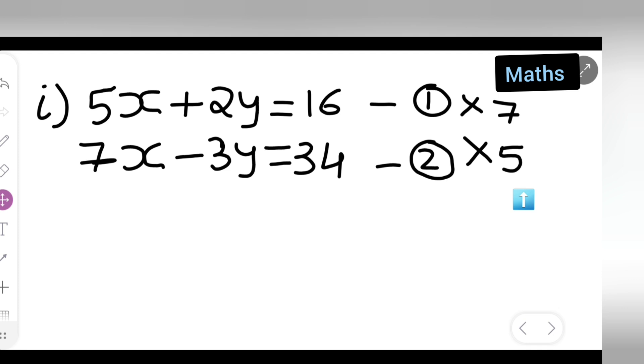So now what I am going to do is 7 times 5 are 35. So write down 35x plus 2 times 7 are 14, 14y is equal to, now 16 multiplied by 7 you all have to do. So 16 times 7, 7 times 6 are 42, 7 times 1 are 7, 8, 9, 10, 11, 1, 1, 2.